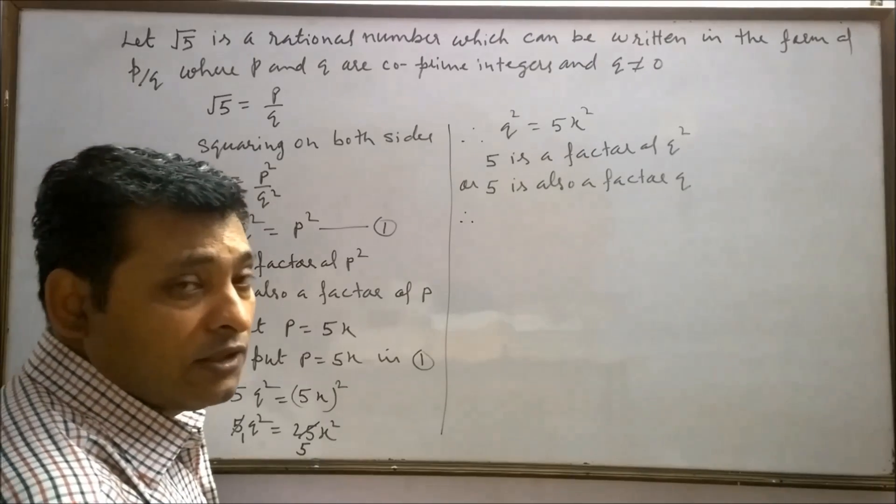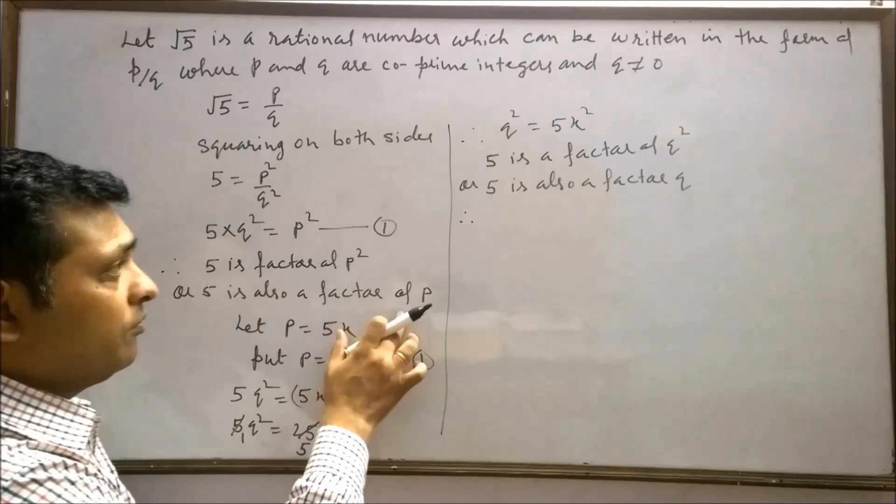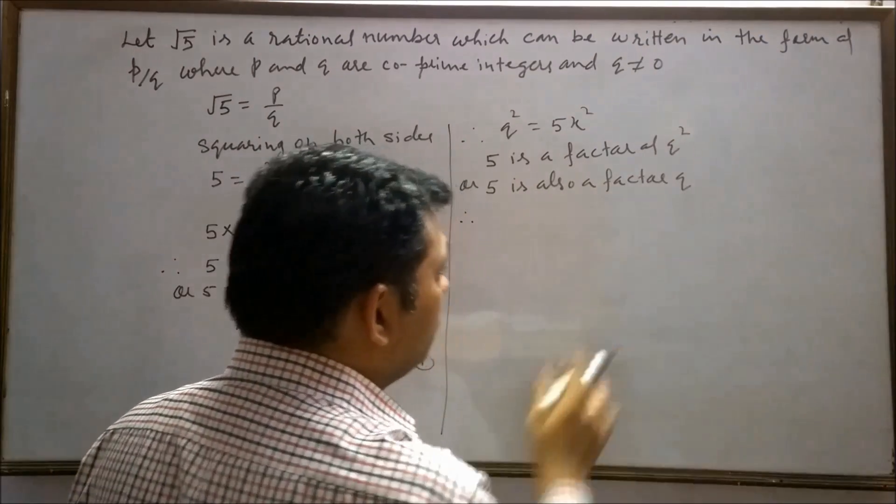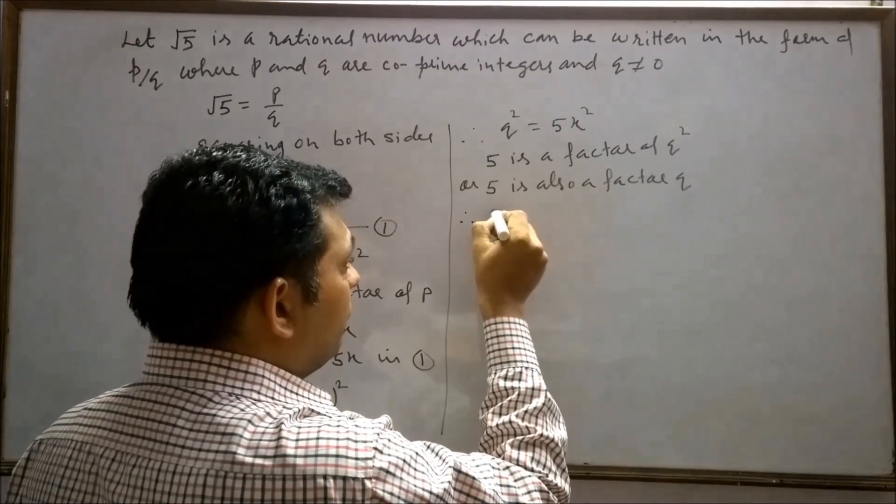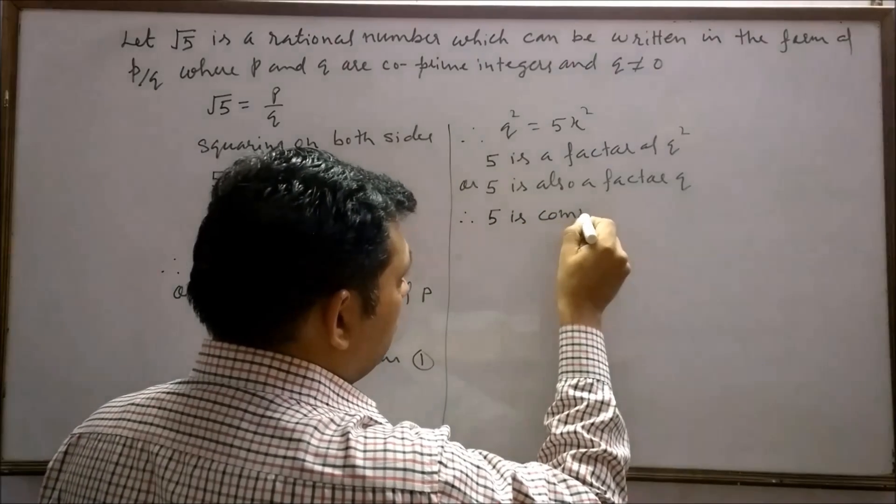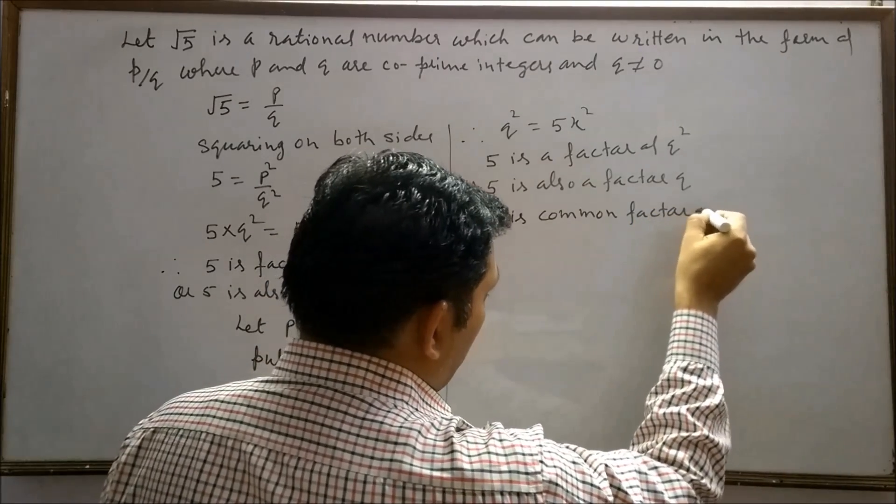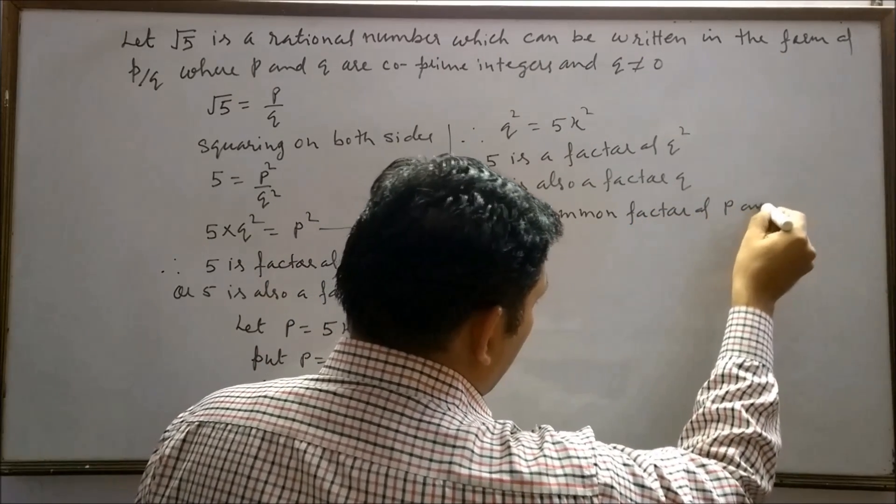Therefore we can say 5 is a common factor of p and q, since 5 is a factor of p and 5 is also a factor of q.